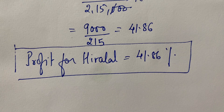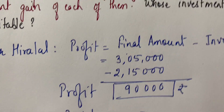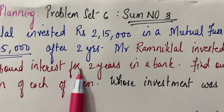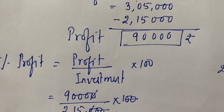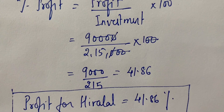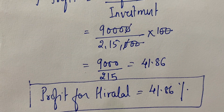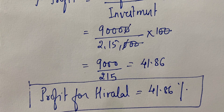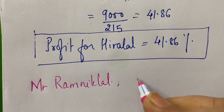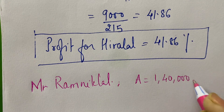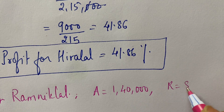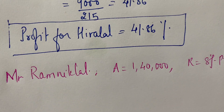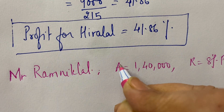Now we come to Mr. Ramnik Lal's investment. He invested rupees 1,40,000 at 8% compound interest in a bank for 2 years. We have to calculate compound interest. For compound interest, the formula is: Amount = P into (1 + r/100) raised to the power n. The time period n is 2 years.